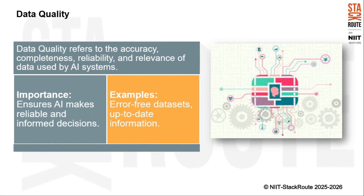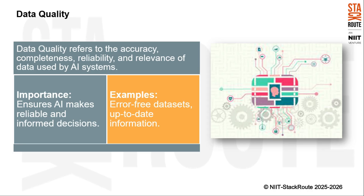Data quality is a crucial aspect when we talk about AI systems. It refers to the accuracy, completeness, reliability, and relevance of the data that these systems use. Accuracy means the data is correct and free from errors; completeness ensures all necessary data points are present; reliability means the data is trustworthy and consistent; and relevance means the data is appropriate and useful for the task at hand. Data quality ensures that AI makes reliable and informed decisions — if the data is inaccurate or incomplete, it can lead to flawed conclusions and unreliable outcomes.